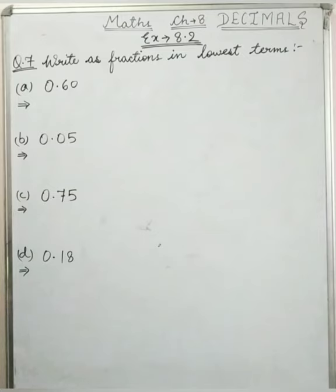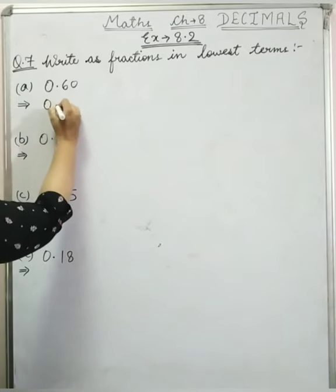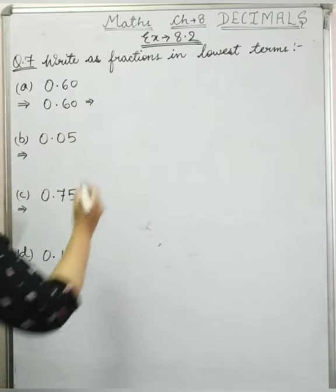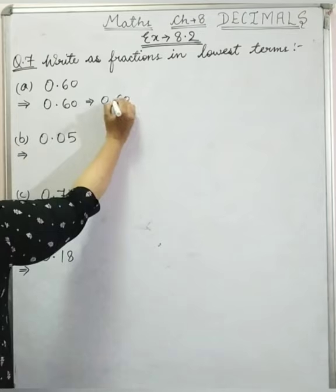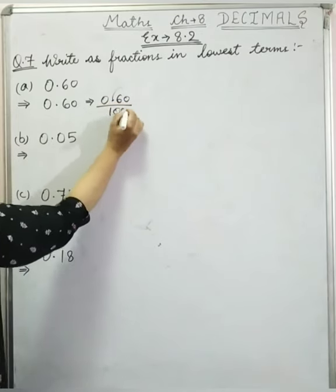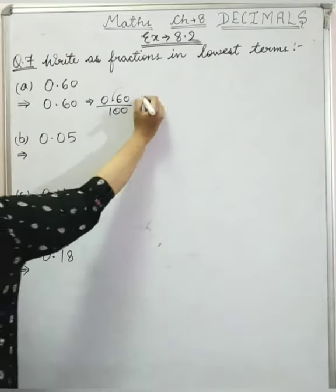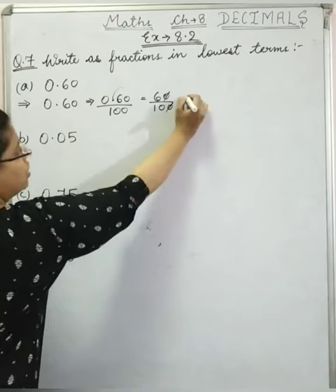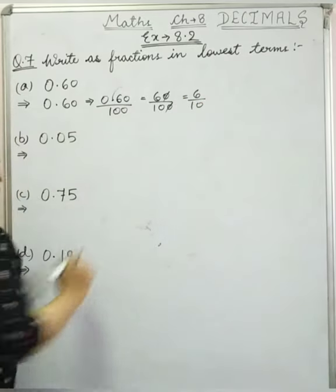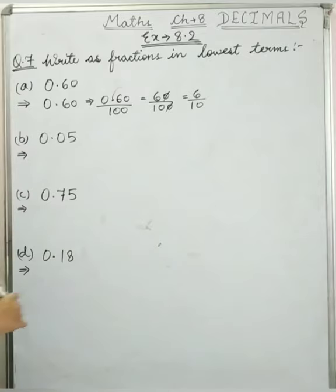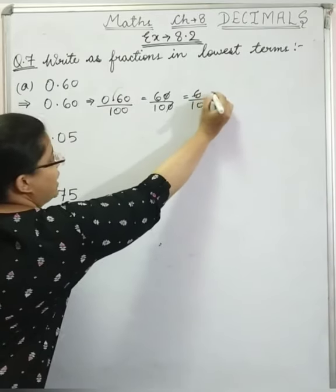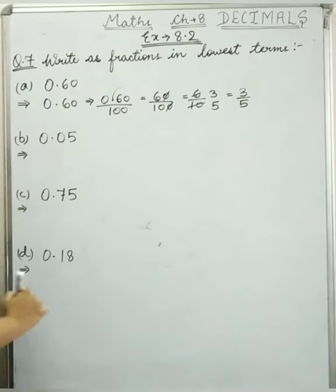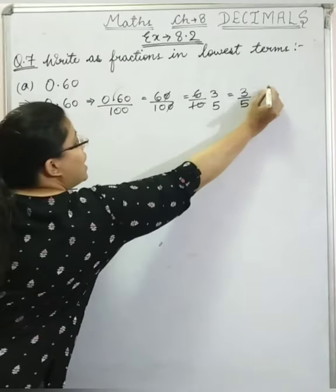First is a: 0.60. After the decimal we have 2 digits, so we put 2 zeros in the denominator: 60 upon 100. Cancelling the common zero gives us 6 upon 10. Now dividing both by 2: 2 times 3 is 6, and 2 times 5 is 10. So the answer is 3 upon 5. That is the lowest term.